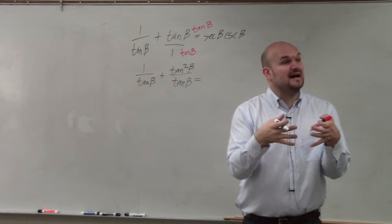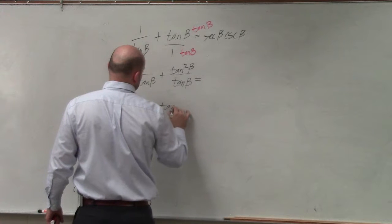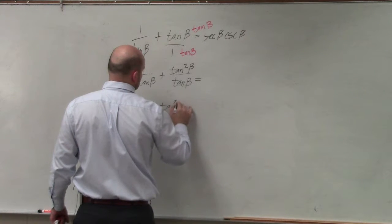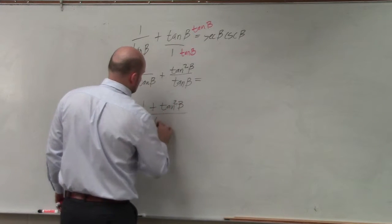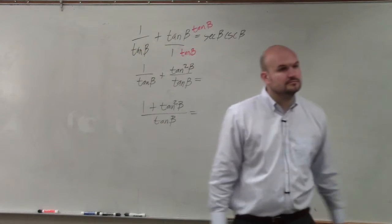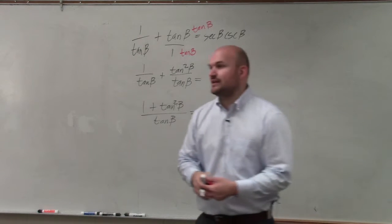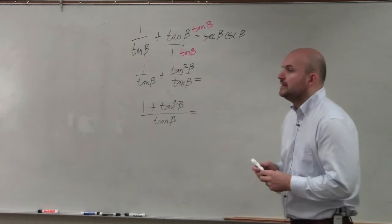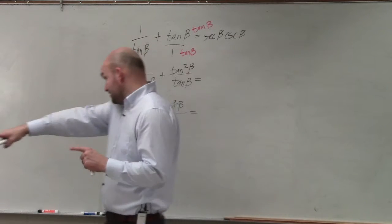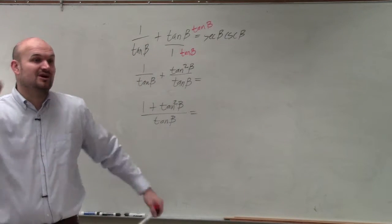Now they have the same denominator so I can combine them. Does everybody follow me? And if you guys look at your Pythagorean identities, you're done. If you look at your Pythagorean identities on that sheet of paper, you should know that 1 plus tangent squared of beta is going to equal secant squared.